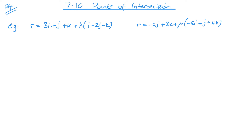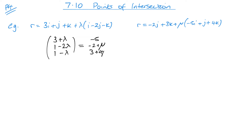So with two vectors, I want to first write these as column vectors and then, just like with any other lines, we make them equal to each other. For the left vector we have 3i plus λ, 1j minus 2λ, and 1k minus λ. On the right we have 0i minus 5μ, minus 2j plus μ, and 3k plus 4μ — written in column vector form and set equal to each other.